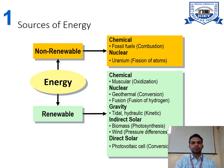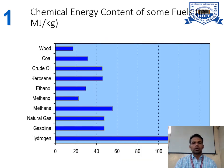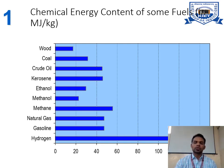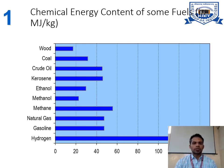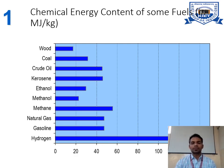Now, this is the chemical energy content of some fuels, with units in megajoules per kilogram. You can see different types of energy content for fuels like wood, coal, crude oil, kerosene, ethanol, methanol, methane, natural gas, gasoline, and hydrogen. You can observe that hydrogen has the highest chemical energy content among these sources.